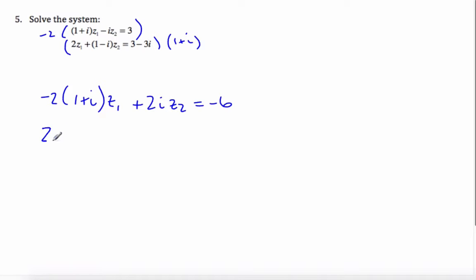And the second one, I get 2 times 1 plus i times z1 plus 1 minus i times 1 plus i times z2 equals 3 minus 3i times 1 plus i.